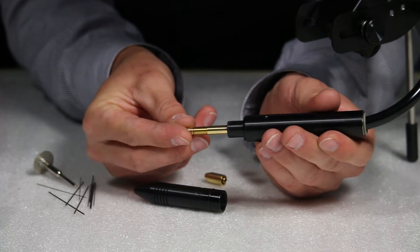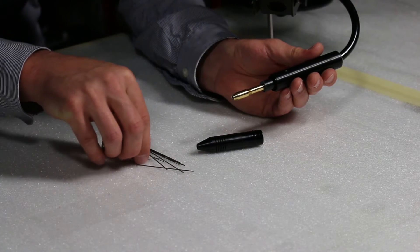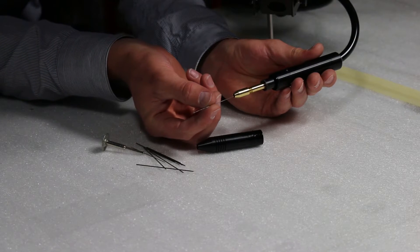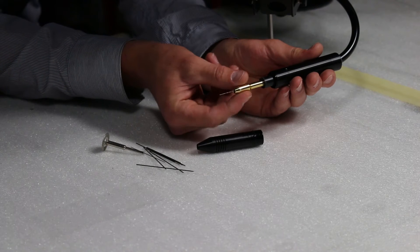Insert the 0.5mm electrode collet. Screw on the collet cap halfway. Insert the 0.5mm electrode. Screw the collet cap on until it is snug.